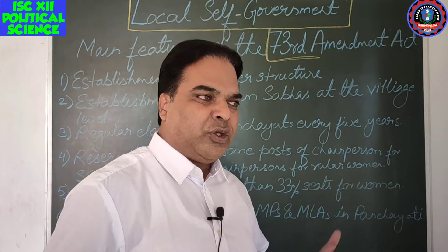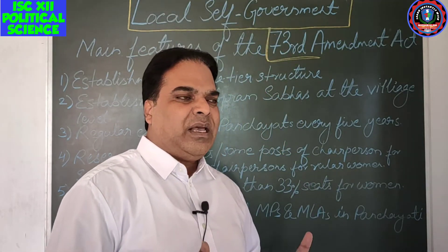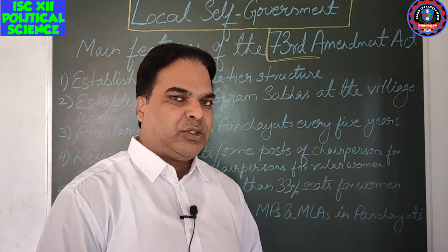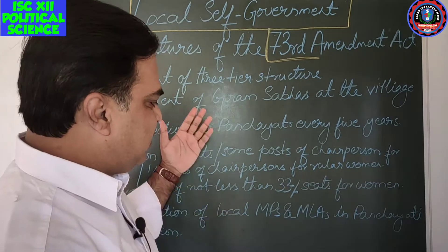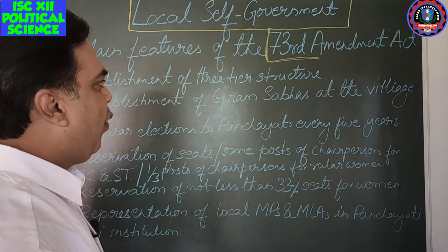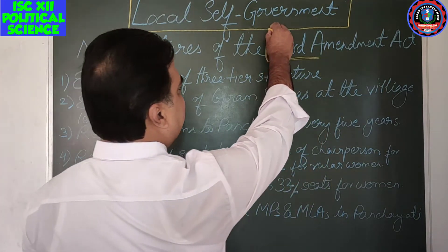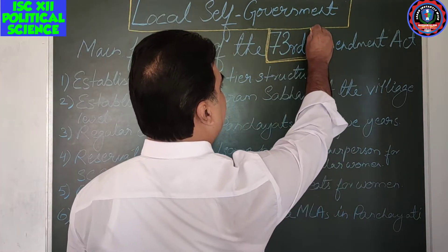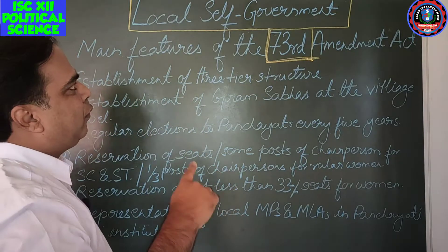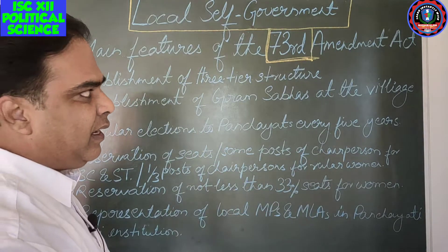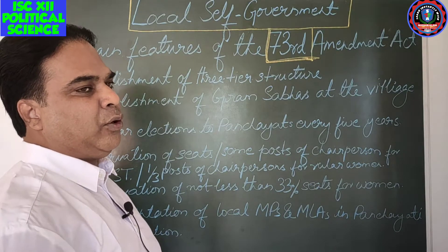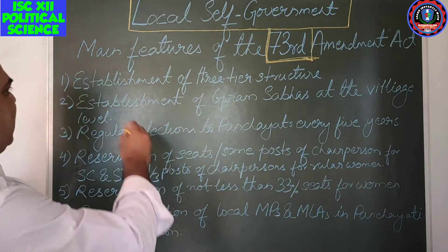You may be asked questions like 'mention the important features of the 73rd Amendment Act.' So I am going to explain the main features one by one. The 73rd Amendment Act deals with local self-government in rural areas, and the 74th Amendment Act deals with urban local self-government.